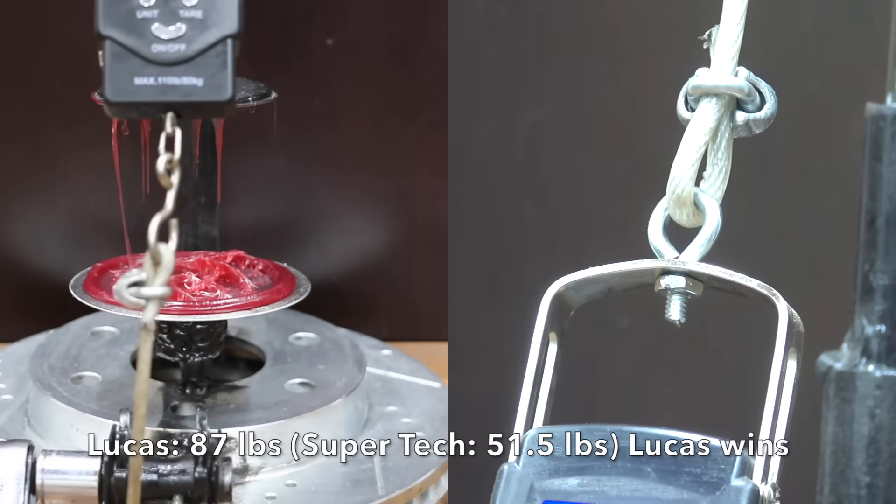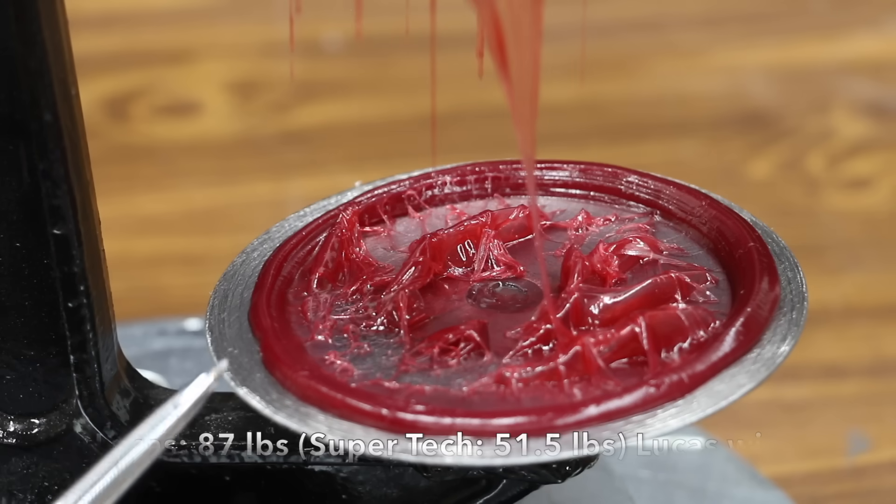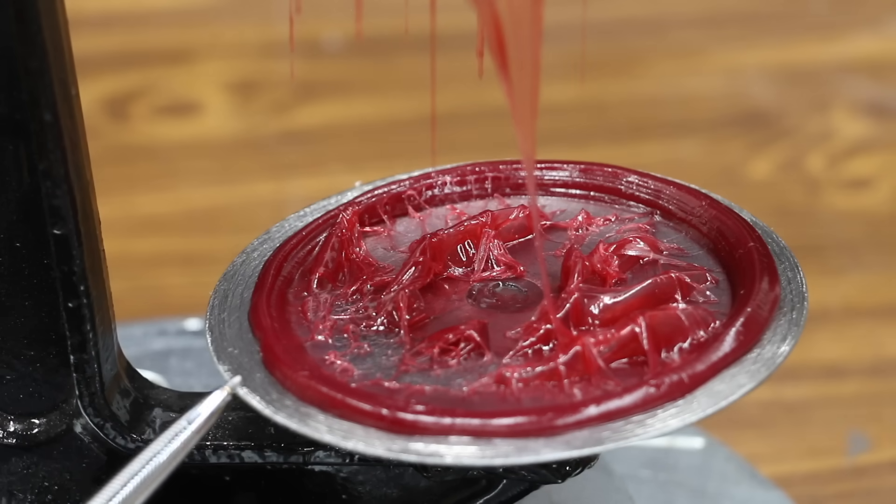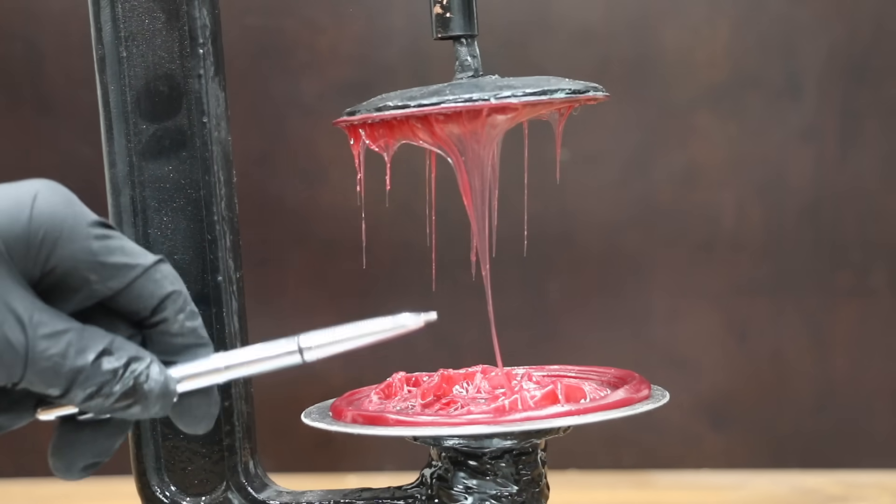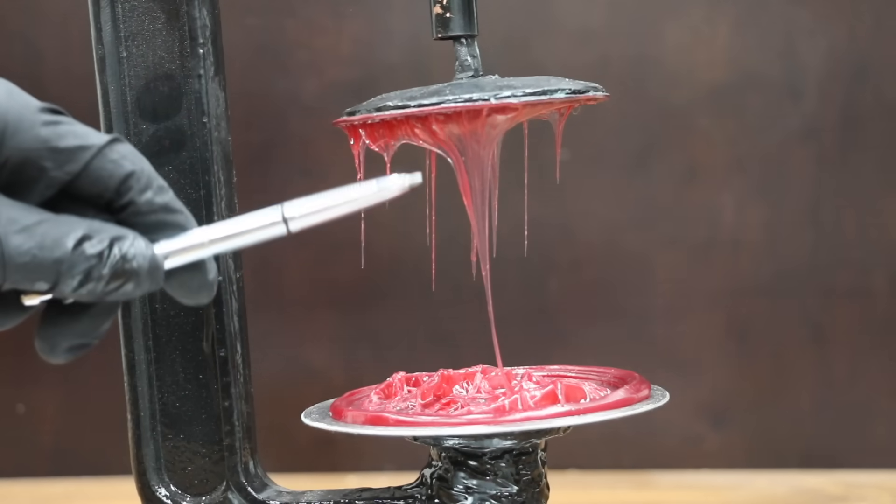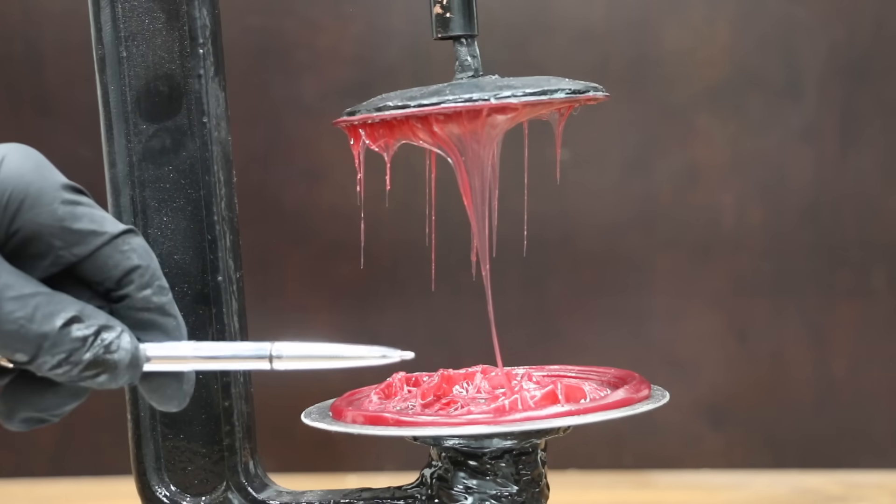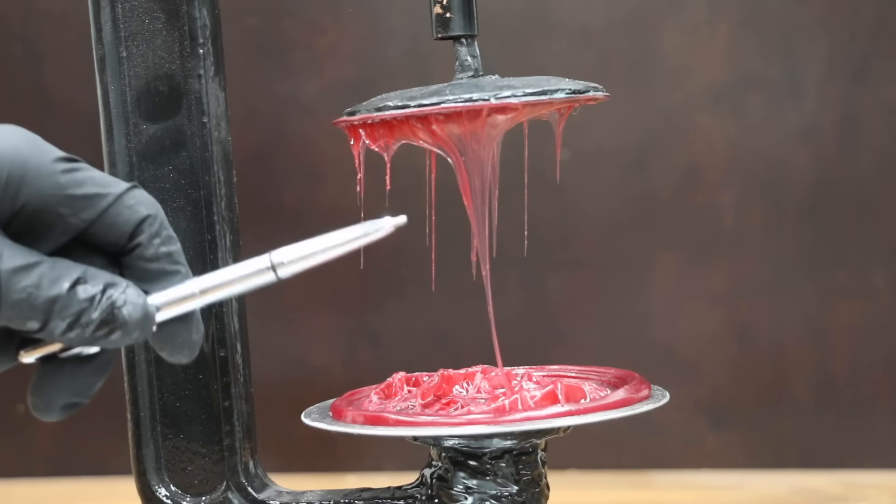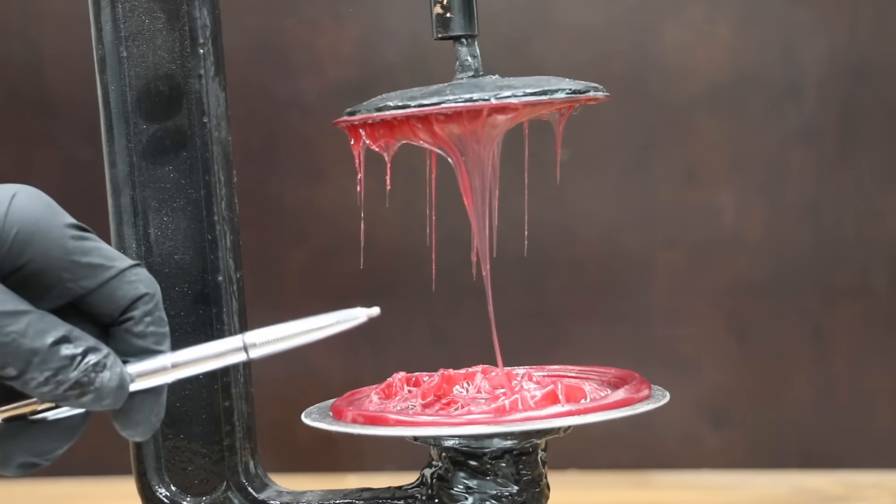About 87 pounds. Much better than the Supertech. That's an amazing difference between the two regarding tackiness. I'm not sure what the technical term is for these grease streamers. We've got one reaching from the very top all the way down to the bottom. This is some very cohesive and adhesive stuff. Very impressive by the Lucas brand.